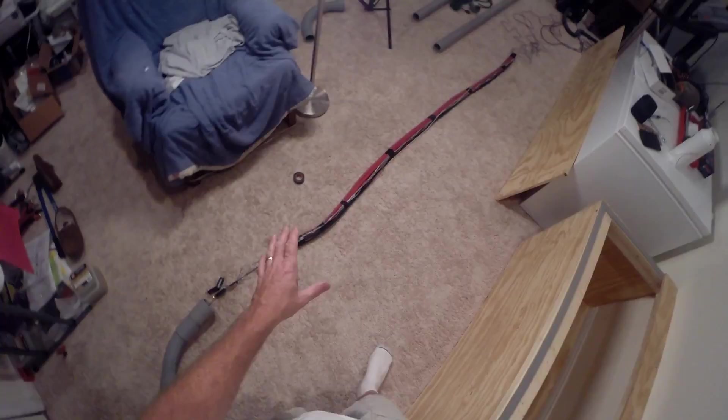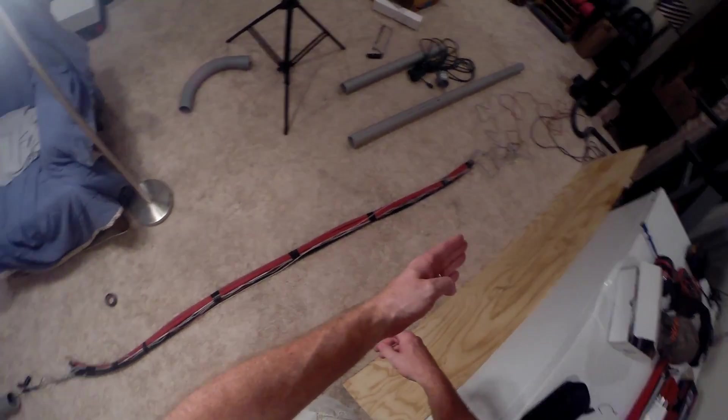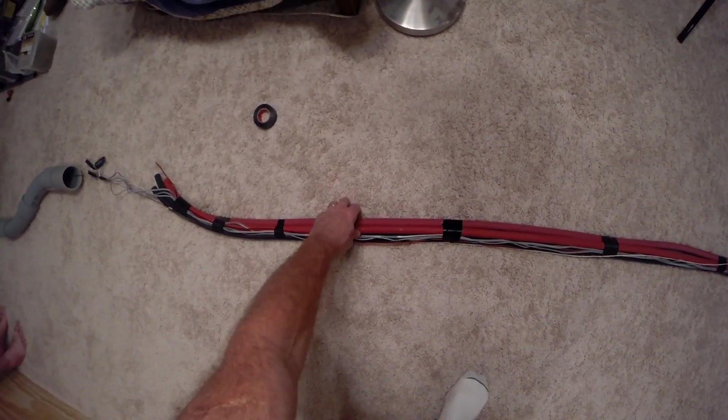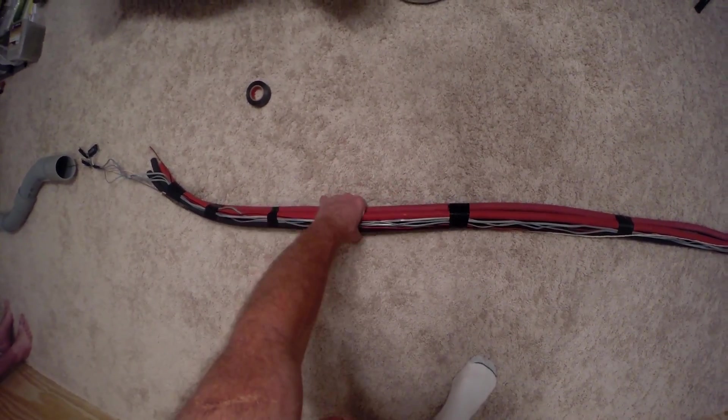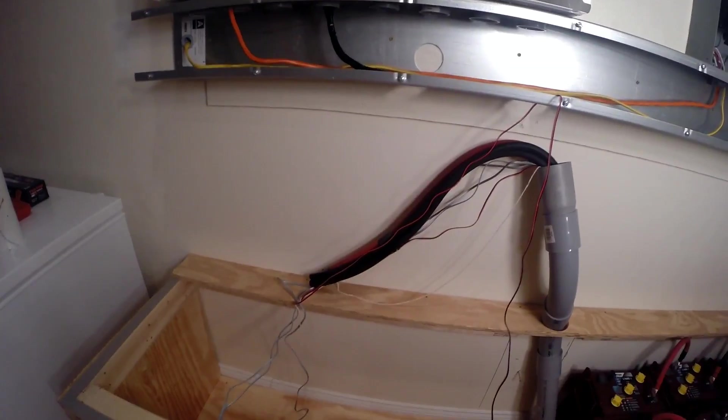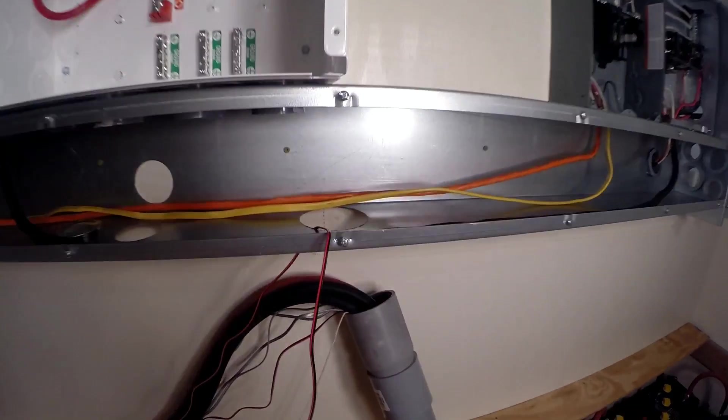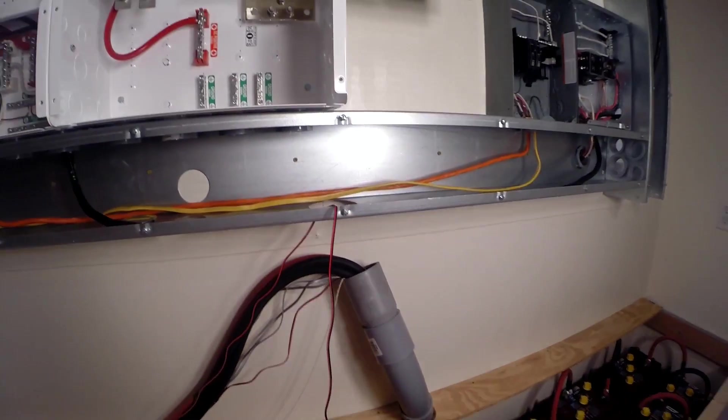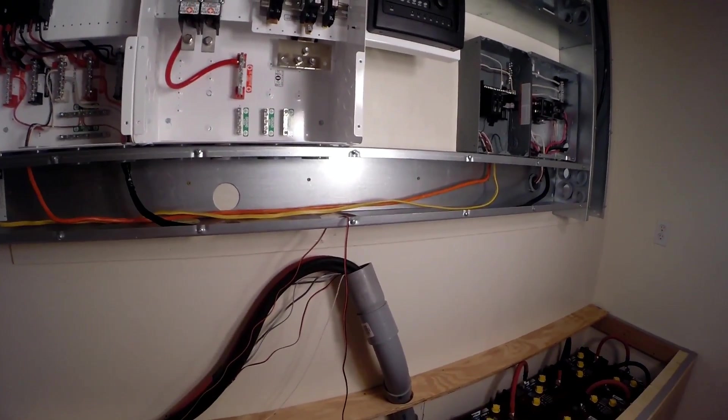There we go, four cables. What I got here is I wrapped all these wires together - two reds, two blacks. Now I got to get all these cables up through this hole, then I can put the conduit in place and put the straps on.